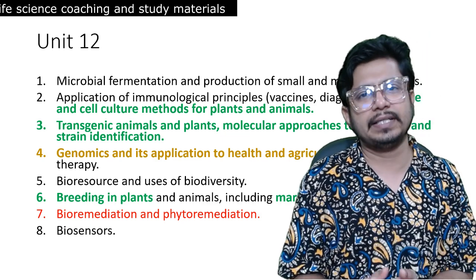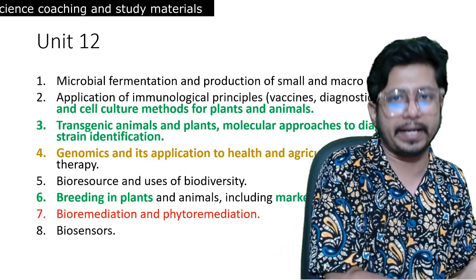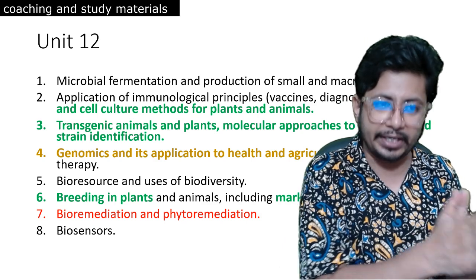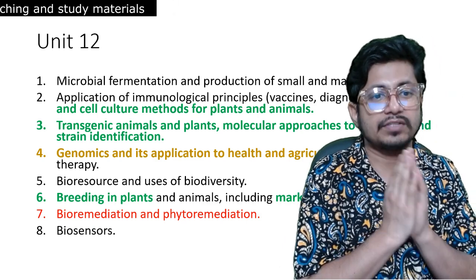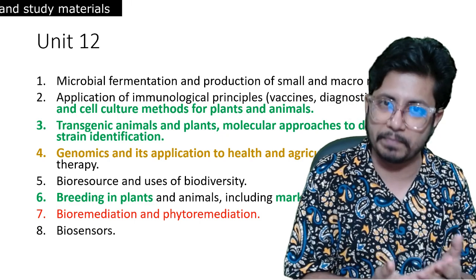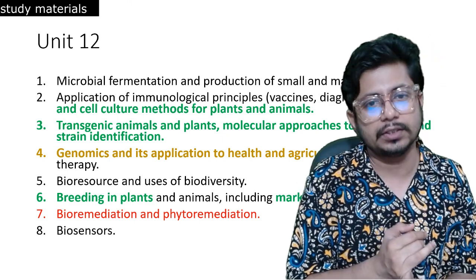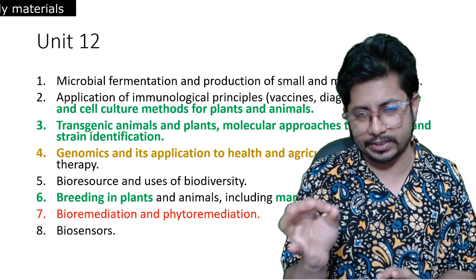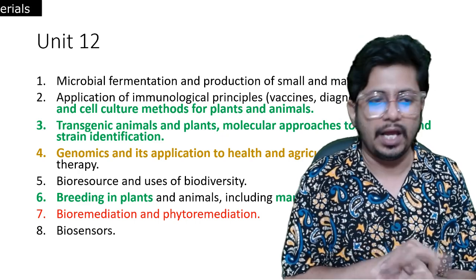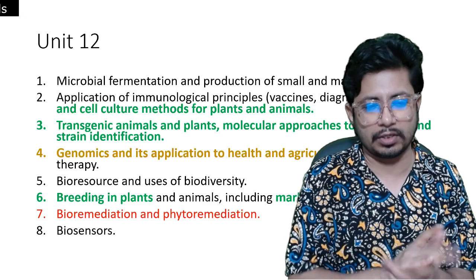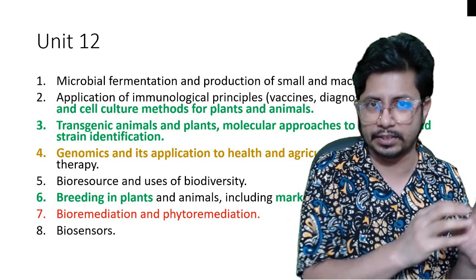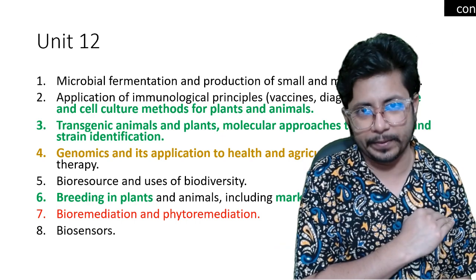The important topics are: plant and agricultural biotechnology and transgenics, production of transgenic animals and plants, plant tissue culture, animal tissue culture to an extent, gene therapy, gene knockout and knockdown systems, and marker-assisted selection in plant breeding. These are the key important topics.